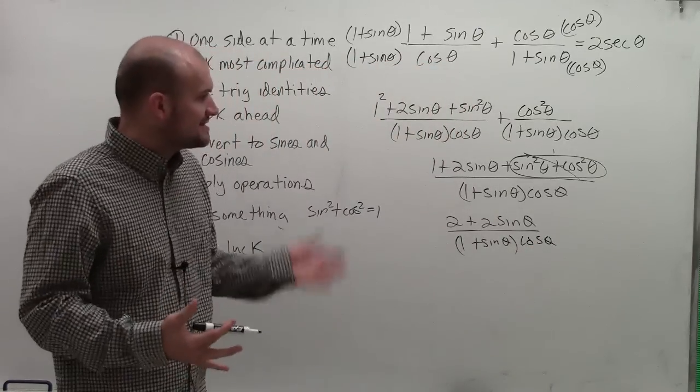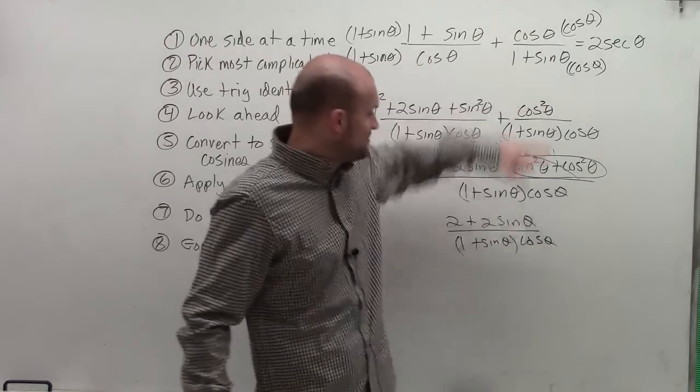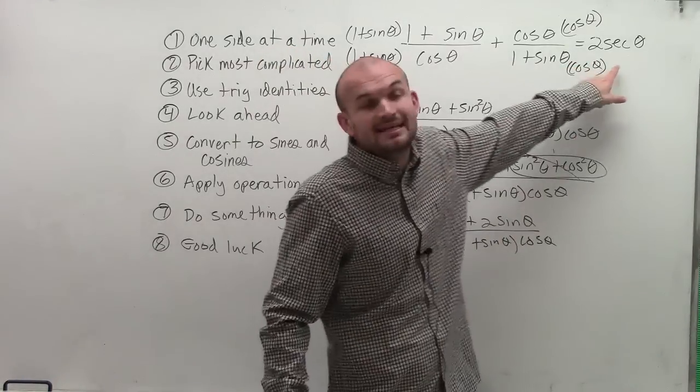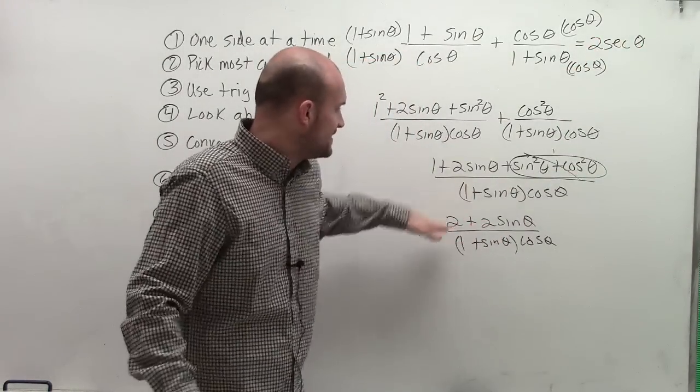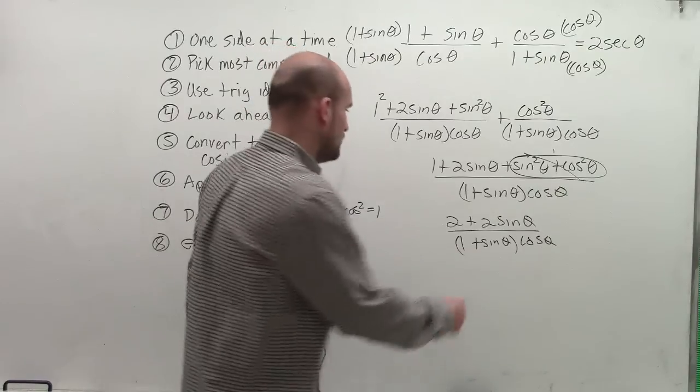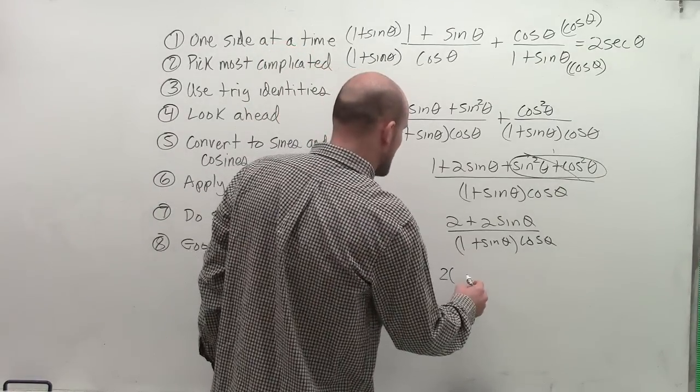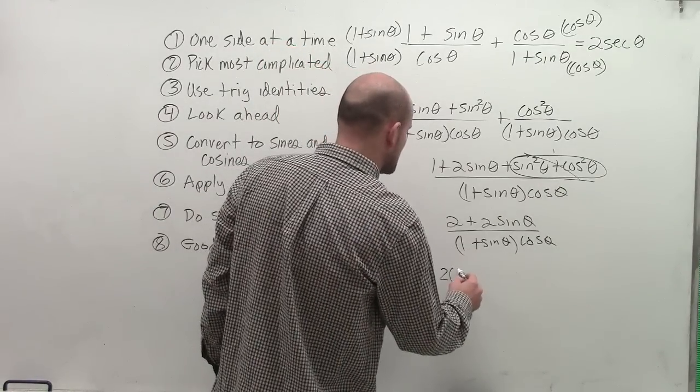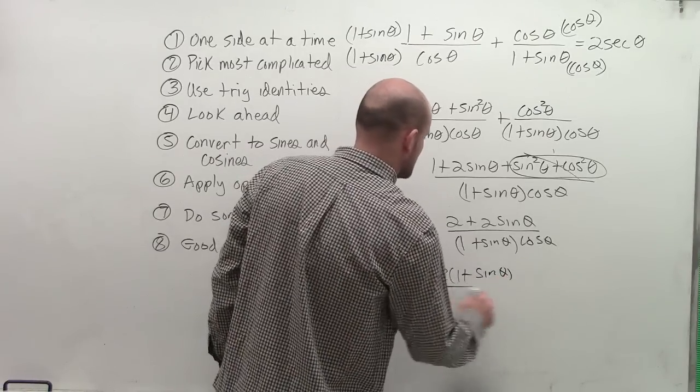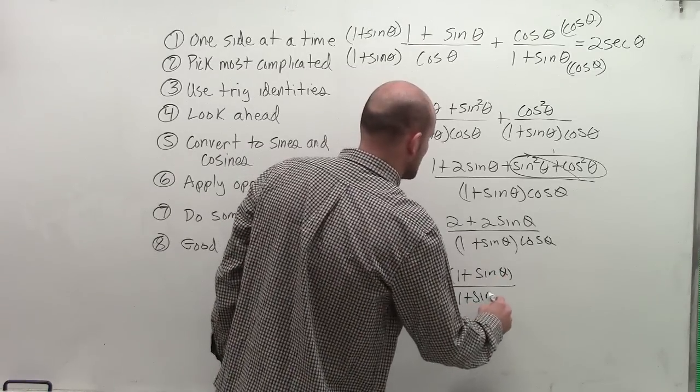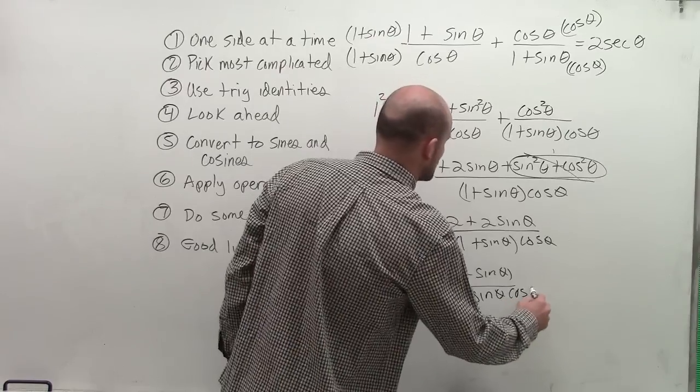So now we just need to simplify. I know I need to keep cosine on the denominator because I need to get secant. And the reciprocal of secant is 1 over cosine. But I need to get rid of this 1 plus sine of theta. Well, if I factor out a 2, what I'm left with is 2 times 1 plus sine of theta, divided by 1 plus sine of theta, times cosine of theta. Which now, these two are going to divide out to 1,